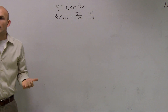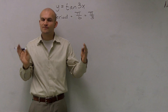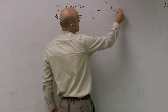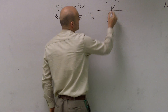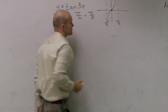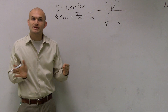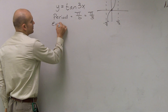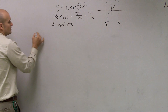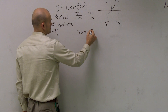Now we need to figure out our endpoints. On a sine or cosine graph, the endpoints of one period could be 0 and 2π. But for a tangent graph, the endpoints of one period are negative π over 2 and π over 2. So we set whatever is inside the function equal to negative π over 2 and π over 2 to find where the new asymptotes are going to be.